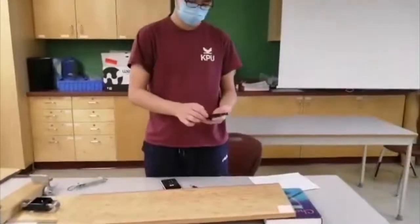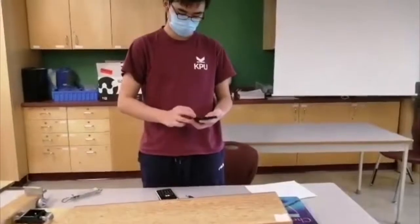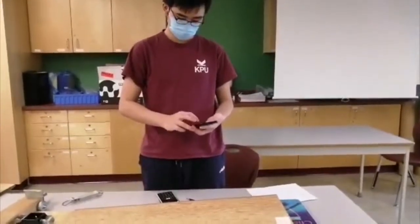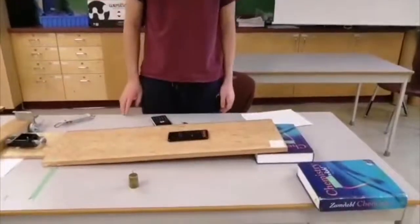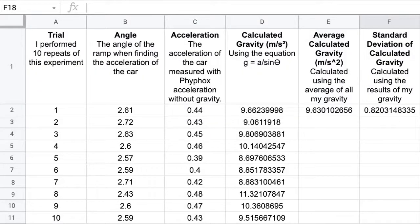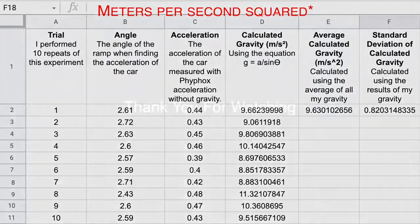After we collected the data, we can infer from the original formula that the acceleration of gravity can be calculated by the acceleration of the car going down the ramp in meters per second squared divided by the sine of the angle of the ramp. In our case, when we used our data, it equated to 9.6 meters per second, which is quite accurate considering the tools we used.